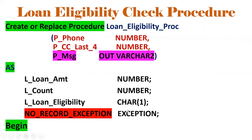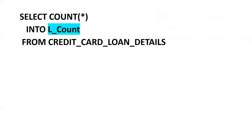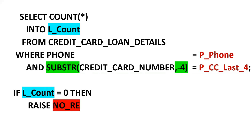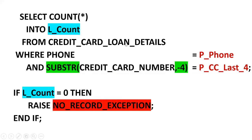Now we write the logic. First, SELECT COUNT(*) INTO l_count FROM credit_card_loan_details WHERE phone = p_phone AND SUBSTR(credit_card_number, -4) = p_last_four. We use SUBSTR to extract the last four characters because the user is entering only four digits. Using the conditional statement: IF l_count = 0 THEN — meaning if phone number and last four digits don't match any record, l_count will be zero, and we RAISE no_record_exception. This exception will be handled by the exception handler.